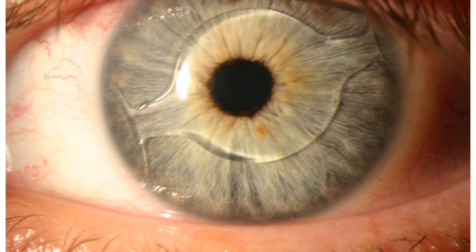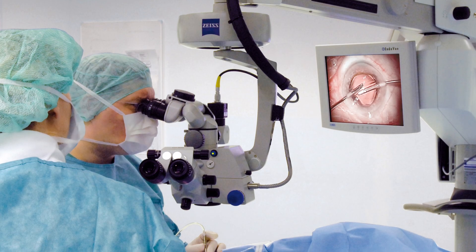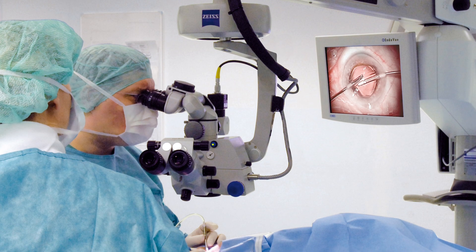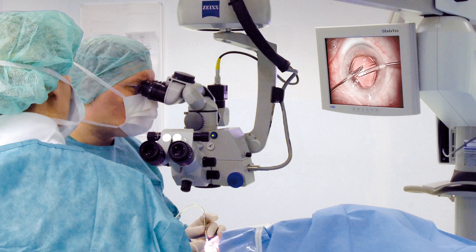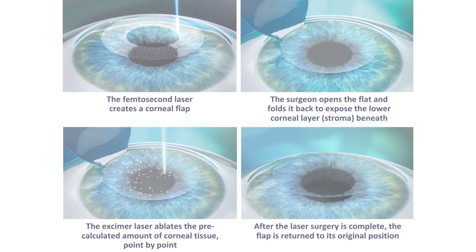Two surgeons remove a cataract using an operating microscope, which provides a highly magnified image of the surgical field. A very fine beam from a helium-neon laser passes through the pupil of the human eye and cuts a tiny hole in the clouded lens so that light can once again enter the eye.